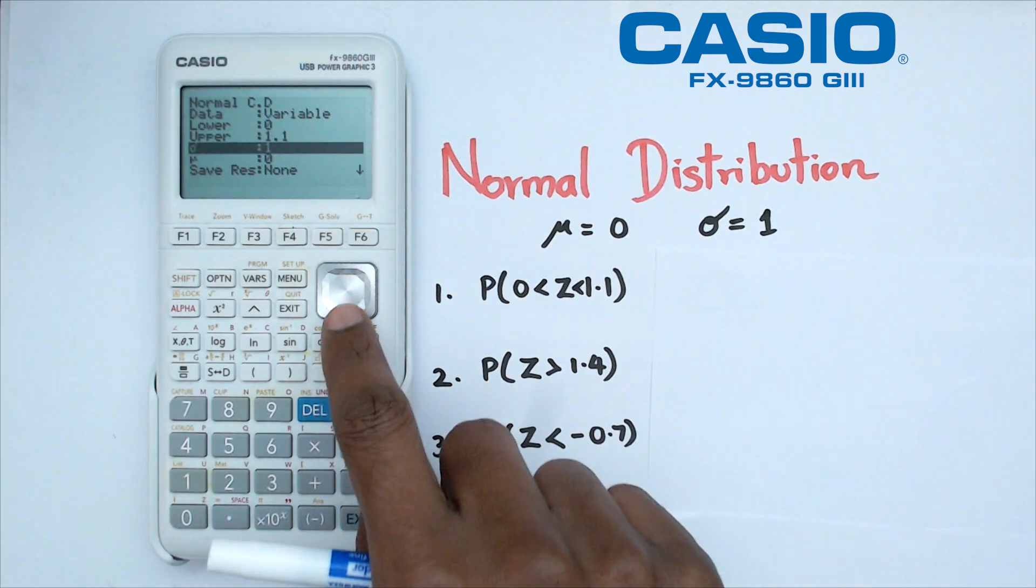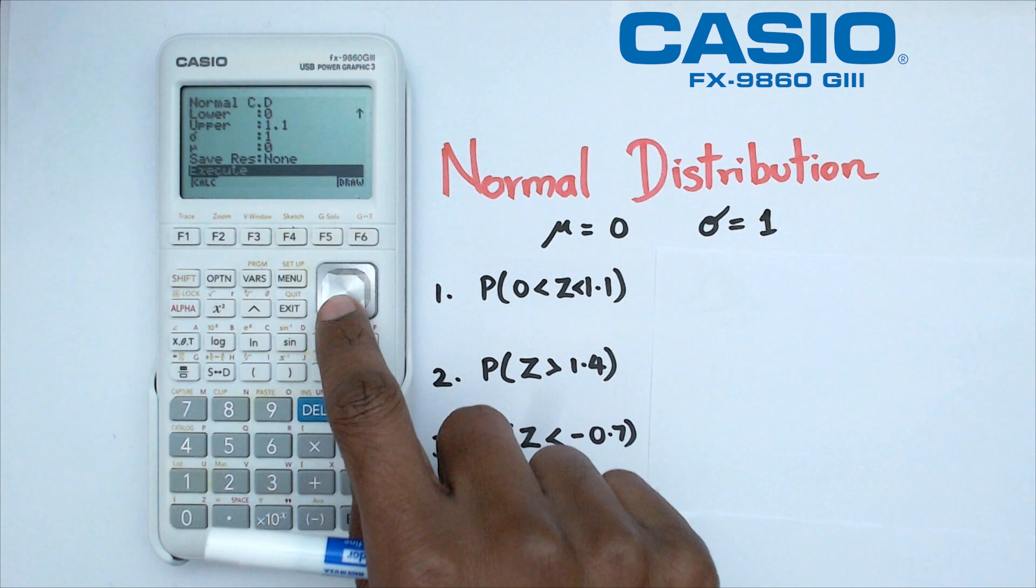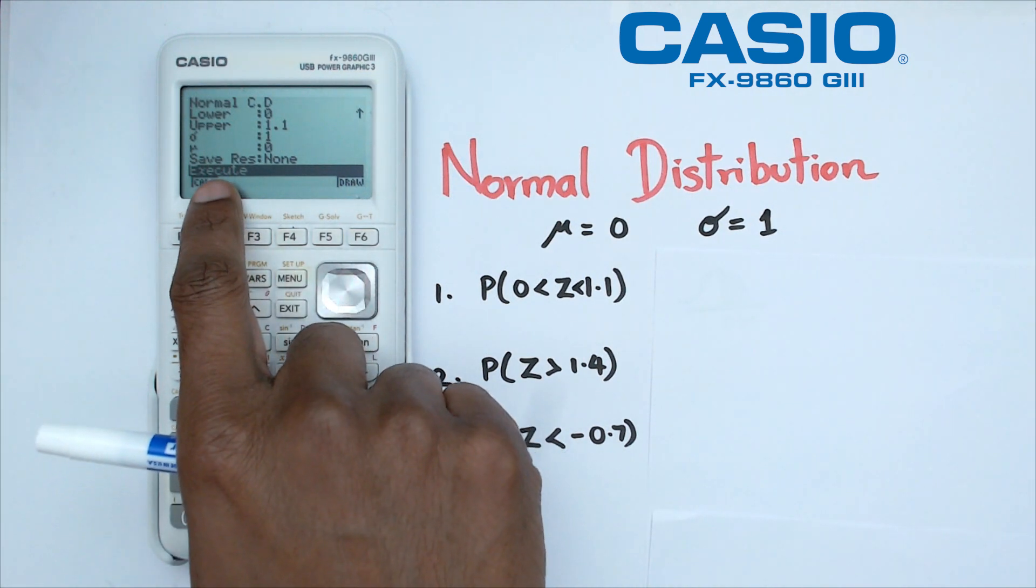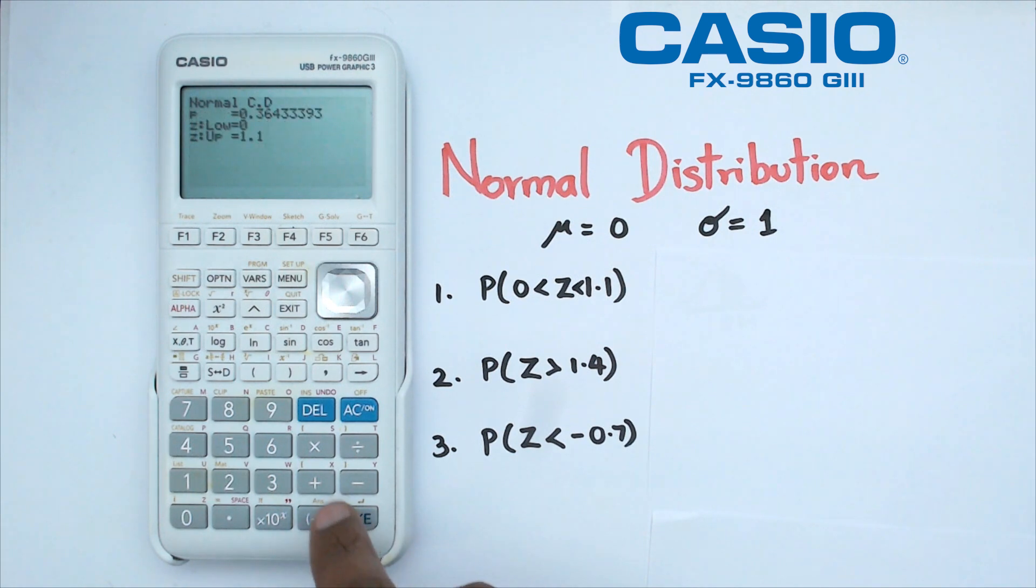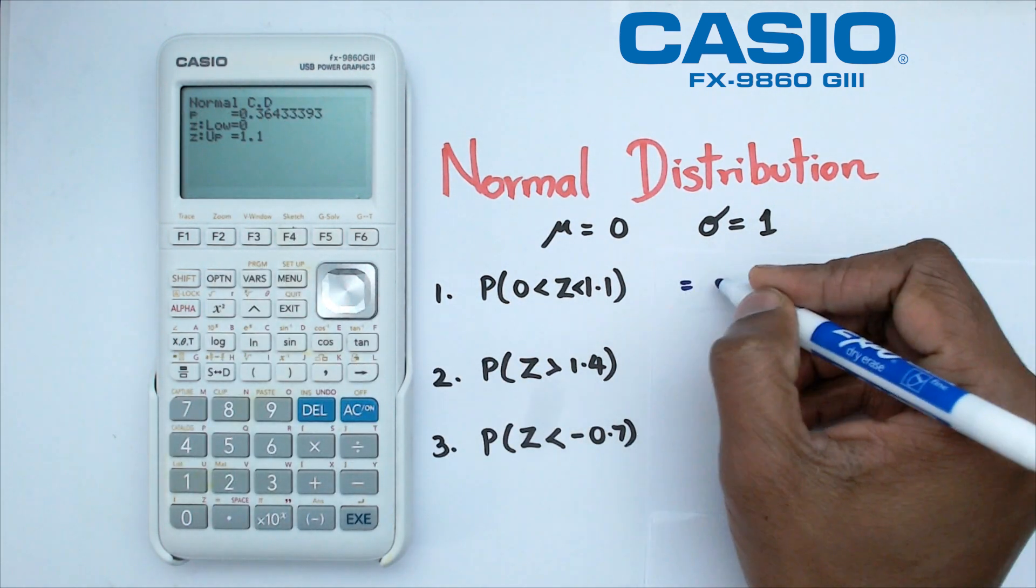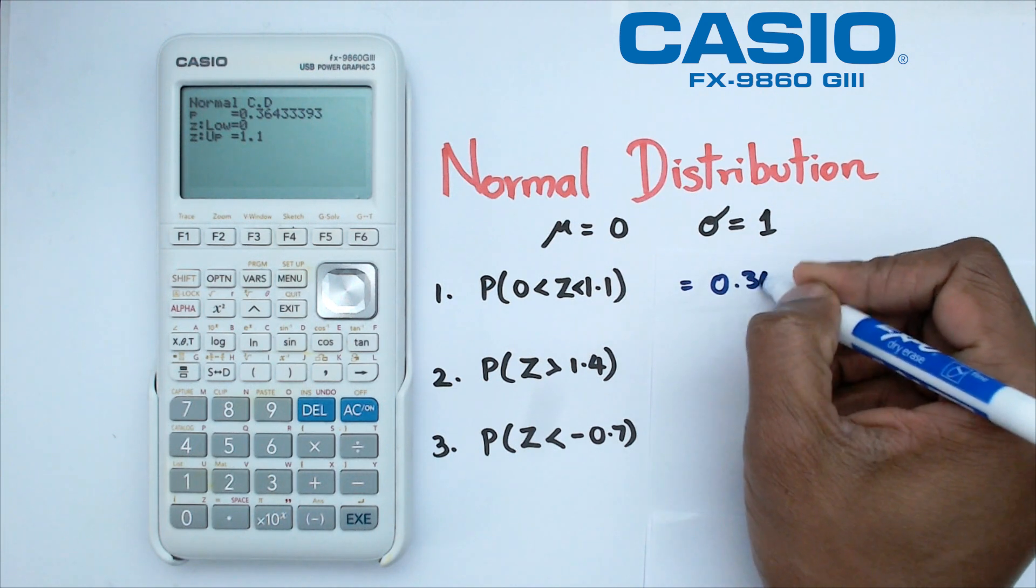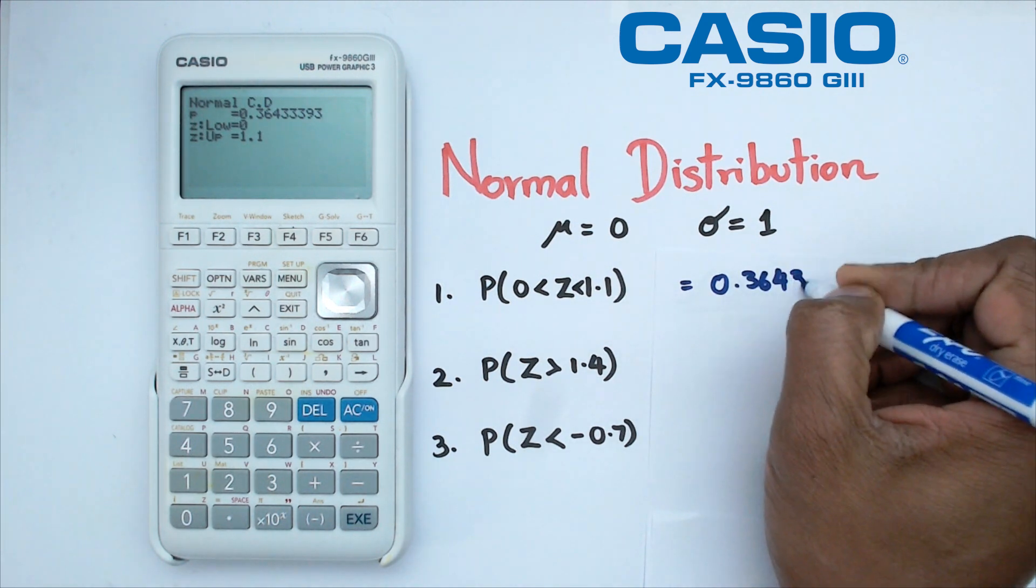Now you press enter and if you go right to the bottom, you can actually click execute but there's also a draw function. We're going to click on execute first and when we do that we get a probability of 0.3643.